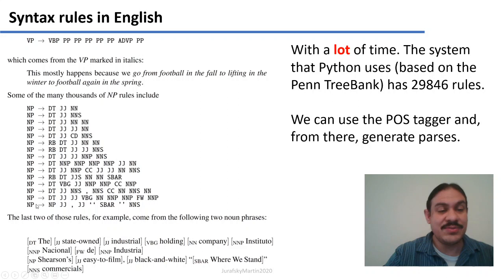We need these kinds of NPs right here for sentences like the state-owned industrial holding company Instituto Nacional de Industria, or Shearson's easy-to-film black and white where we stand commercials. And these are two types of NPs which need these kinds of rules.